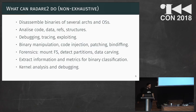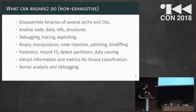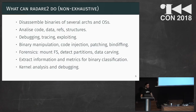What can Radare2 do? This is obviously a non-exhaustive list. It can disassemble binaries of several architectures and operating systems. You can analyze code, data, reference structures. You can debug, do tracing, it can be used for exploiting systems. You can do binary manipulation, code injection, patching, bin diffing. It's also pretty useful for forensics — which was indeed the main purpose of Radare in its beginning. It can mount file systems, detect partitions, do data carving of weird file formats. You can extract information from binaries, gather metrics and make classifications. People also use it for kernel analysis and low-level debugging.